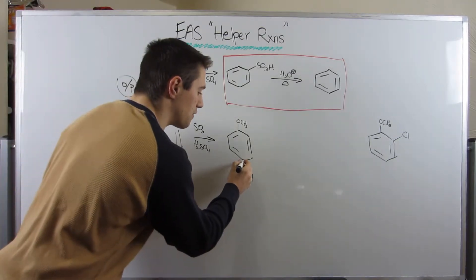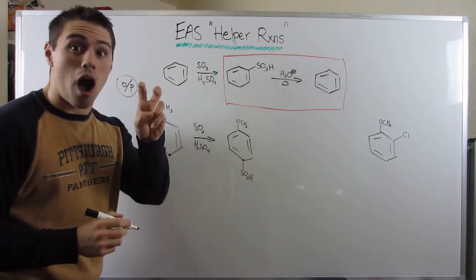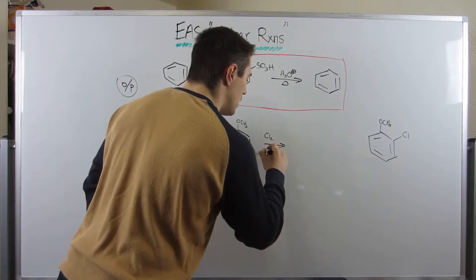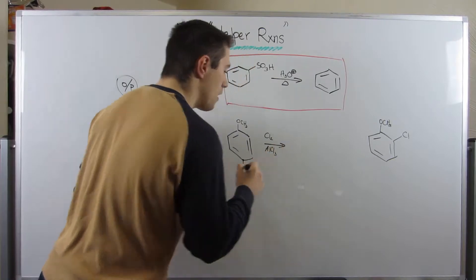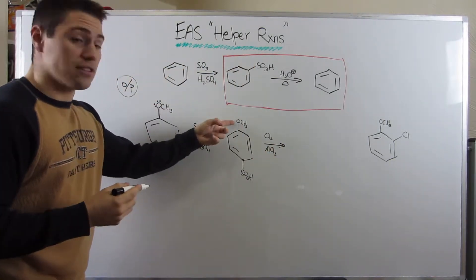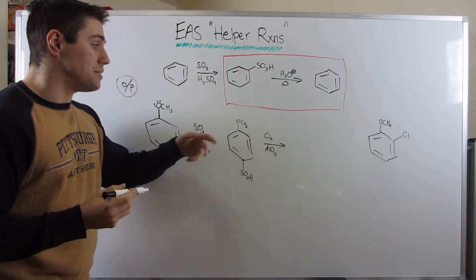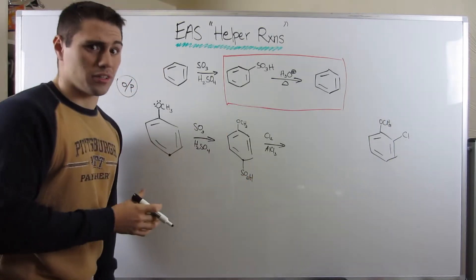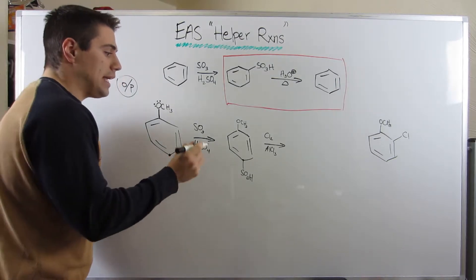Because there's no way we're going to put this massive bulky group ortho to the OCH3. So now that this position is effectively taken or blocked, if we do Cl2 and AlCl3, remember, he's putting electrons into the ring. He's activating the ring. He's the one who's going to be actively directing groups, not this electron-withdrawing sulfonyl group.